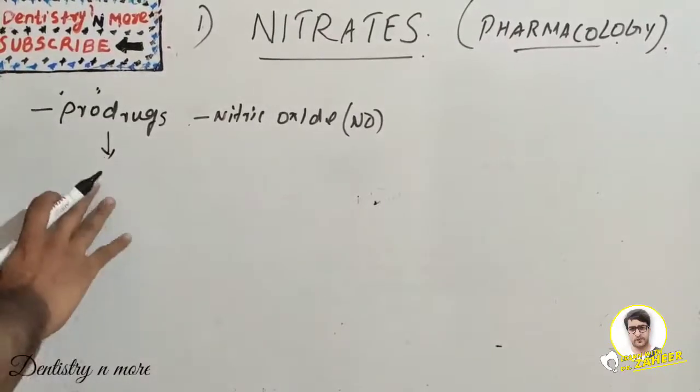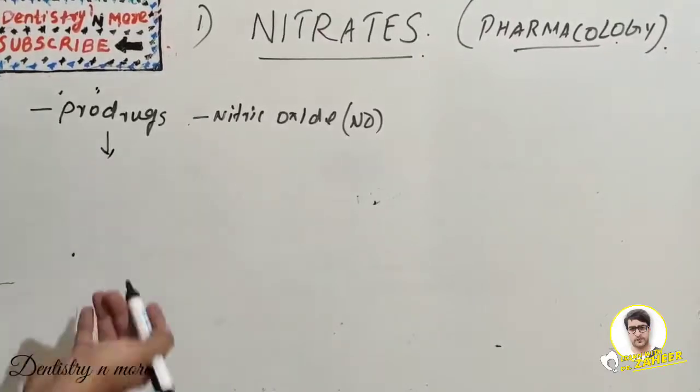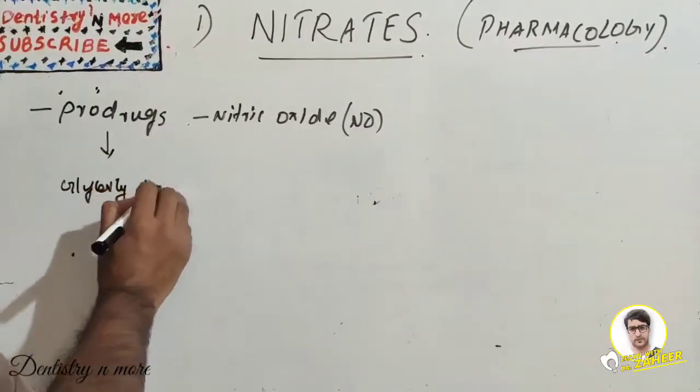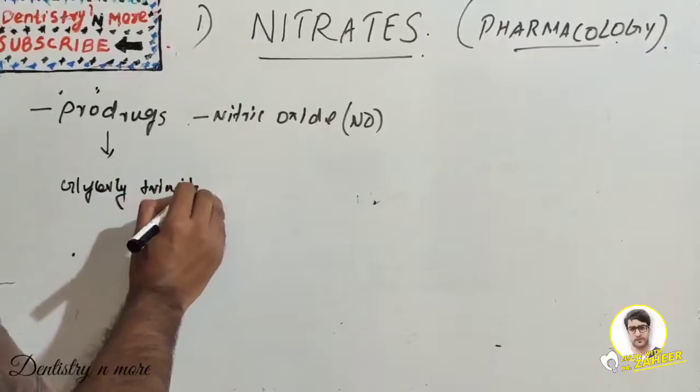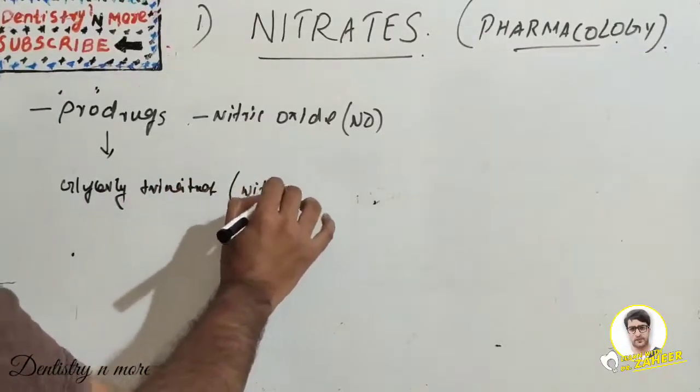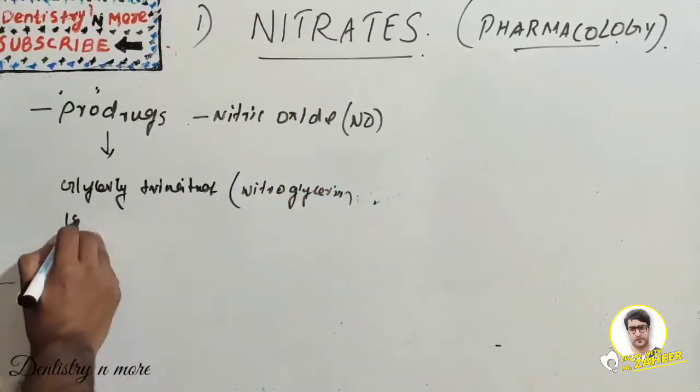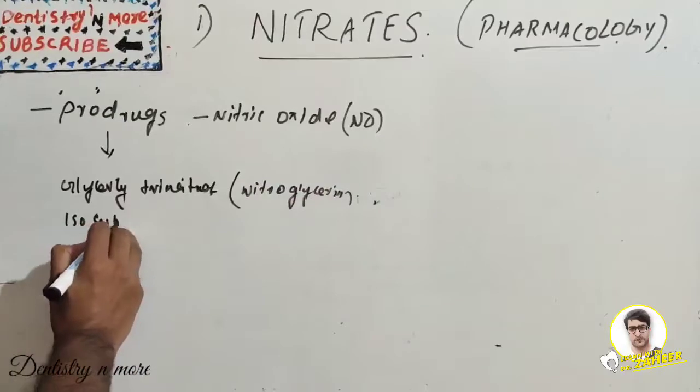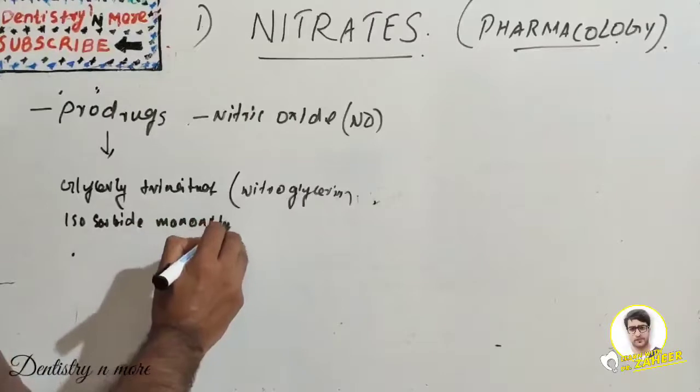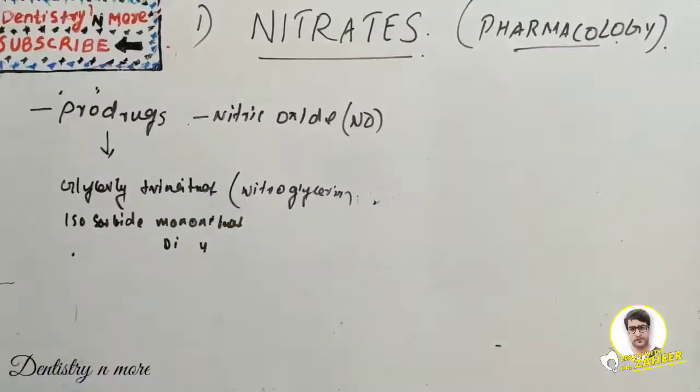Nitrates are prodrugs. Usually the drugs include glyceryl trinitrate, which is also known as nitroglycerin, and we have isosorbide mononitrate and isosorbide dinitrate. So these are the drugs.